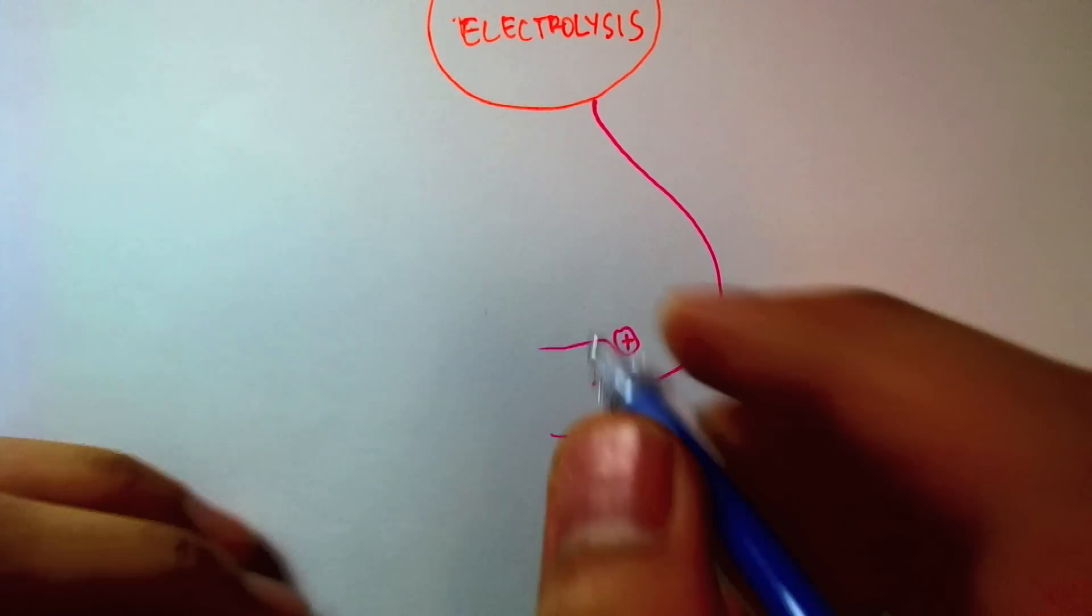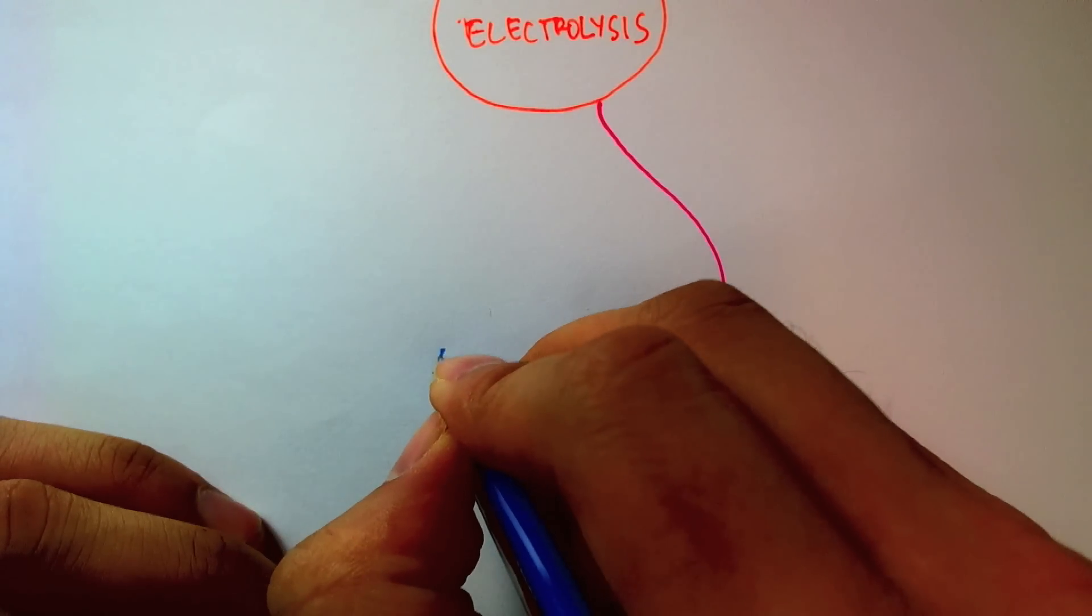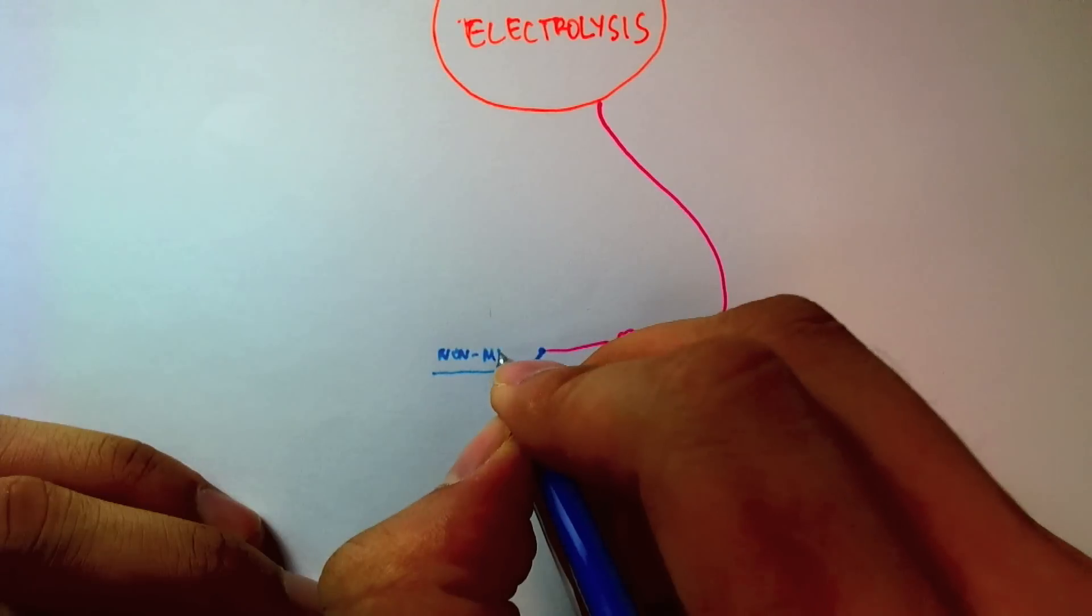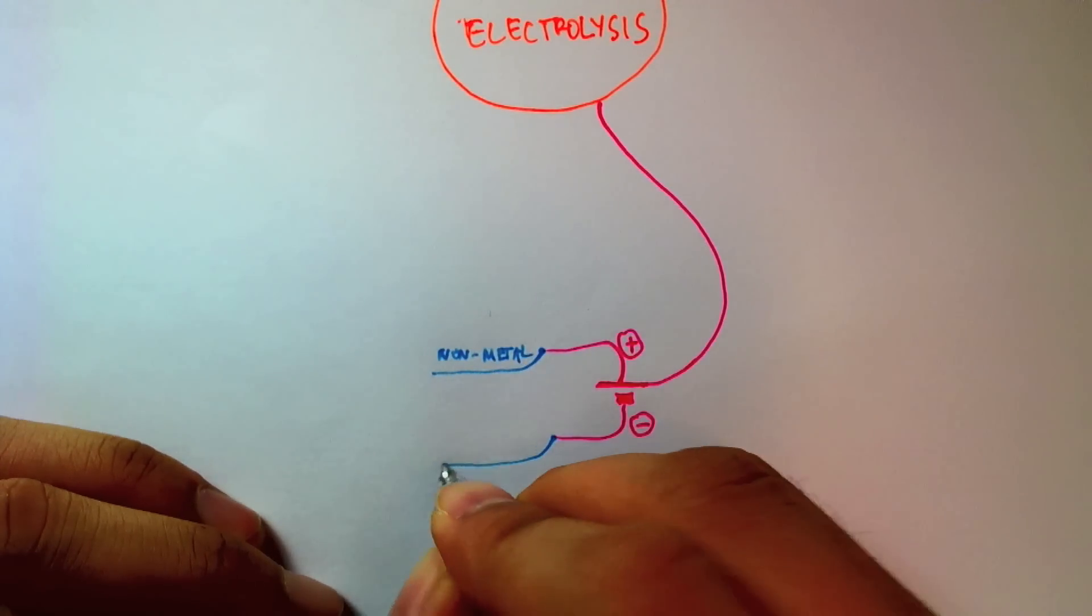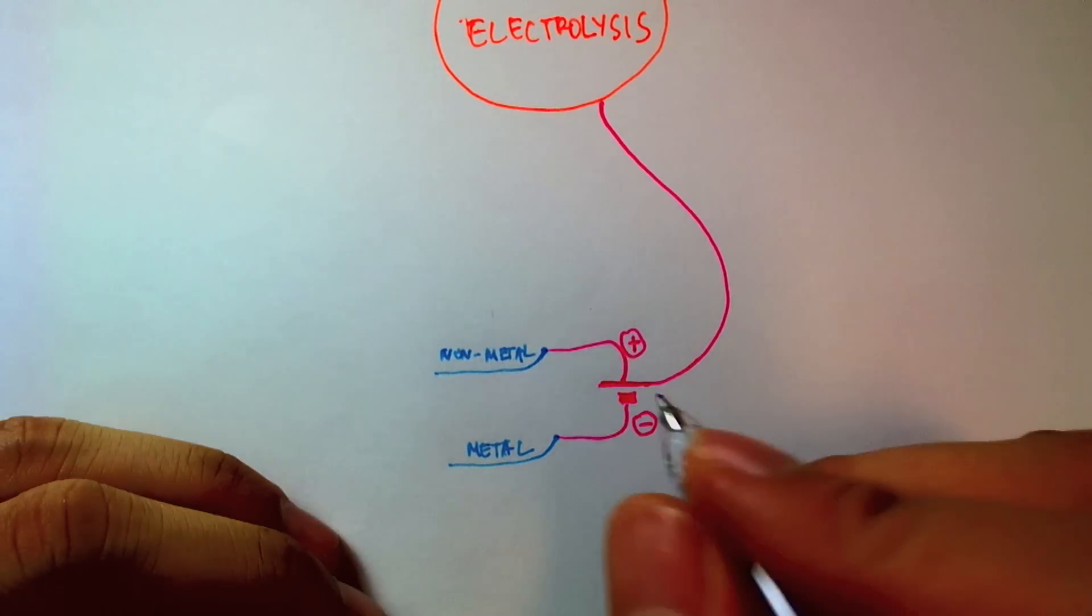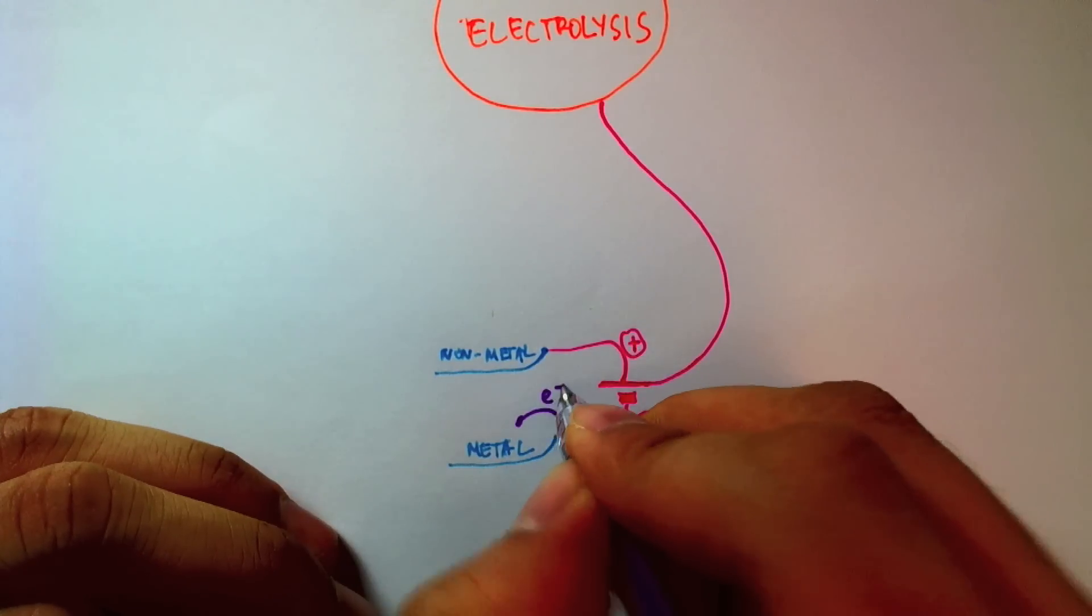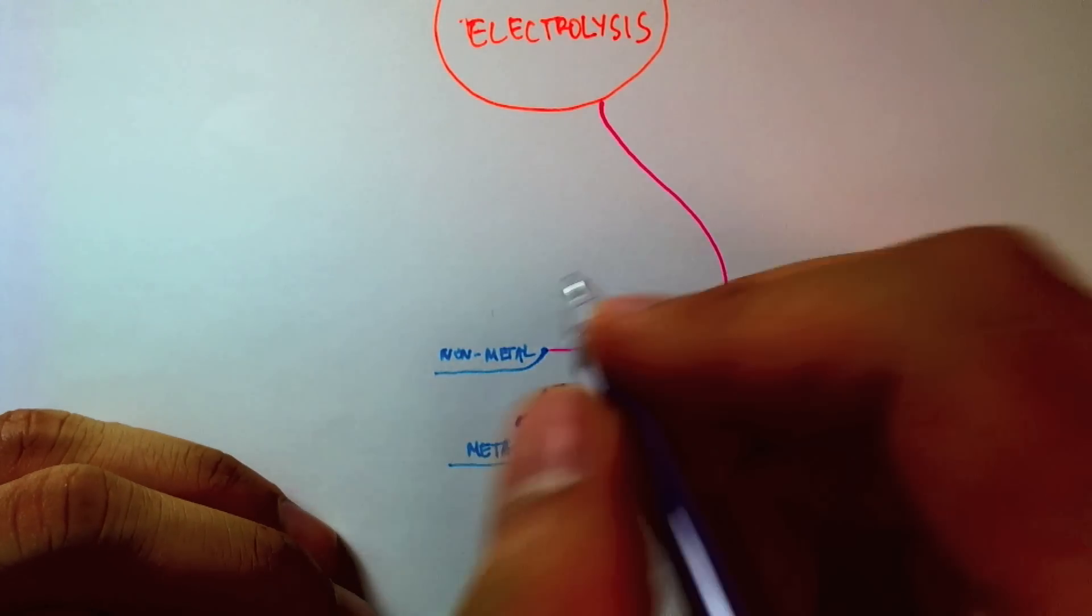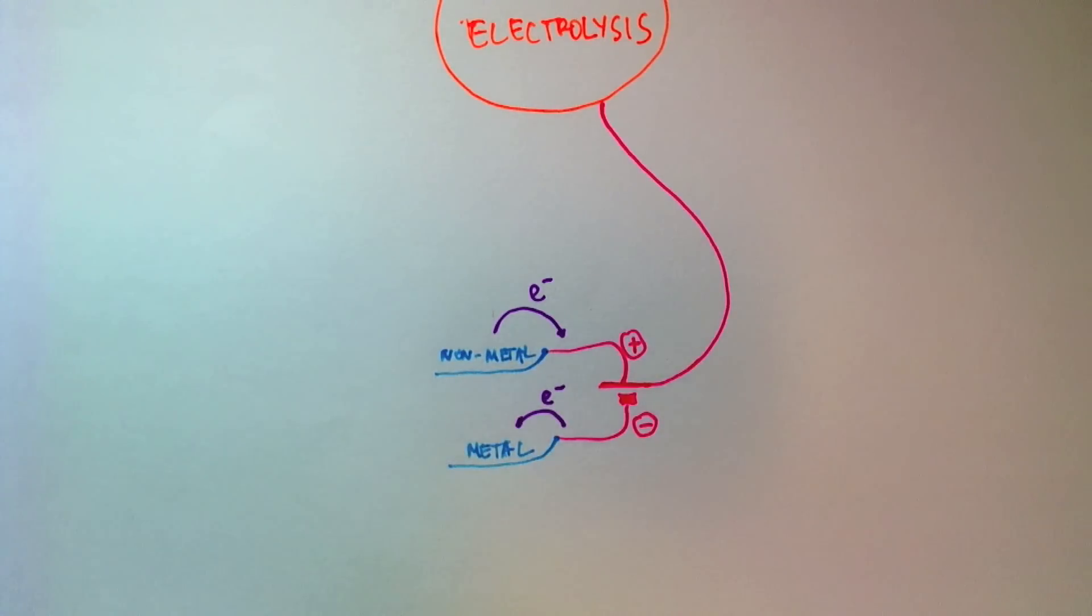And on the positive terminal, what I'll have is the nonmetal being attracted to it and the metal being attracted to the negative terminal since the metal is positively charged. So the metal will receive electrons from the negative terminal of the battery, while the nonmetal will give up its electrons to the positive terminal of the battery.